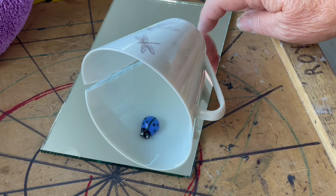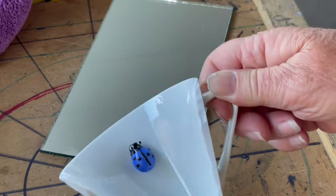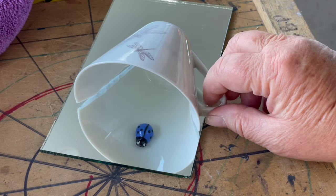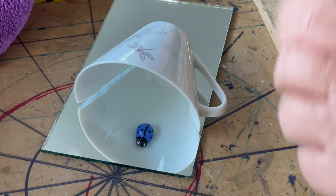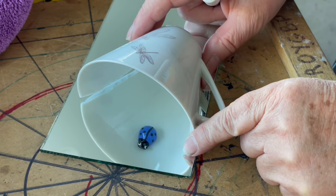As you can see here, it looks like an optical illusion because I'm using mirror, but I really only have half a cup with a little bug stuck on the inside. So how cool is that? With this one, we're going to make a vase.